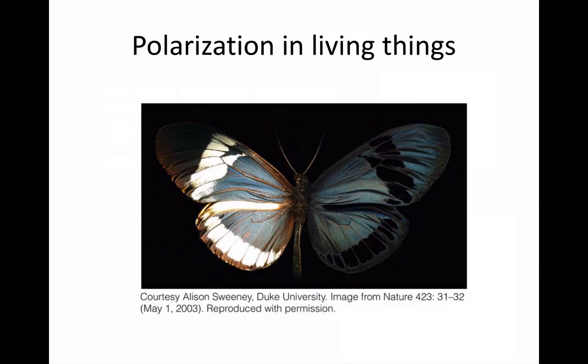Some insects have evolved markings that make use of their ability to see polarised light. In this photograph of a butterfly, the left wing appears as it does normally, but the right wing is shown as it appears when viewed through a polarising filter.